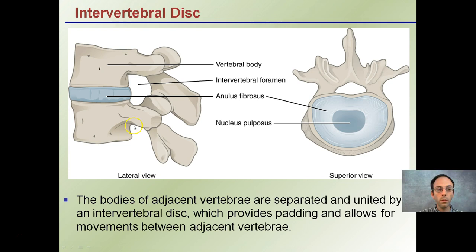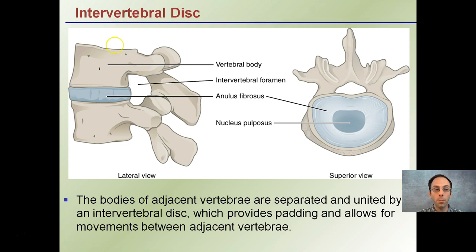The discs within the vertebrae contain cartilage, and it's important that this cartilage acts as a cushion between the two discs. We don't want bone on bone, as that would be extremely painful. We want that slight give, which is provided by the cartilage discs located between the two vertebrae. This cartilage provides padding and allows movement within the vertebrae, so you can twist and turn without feeling massive pain.